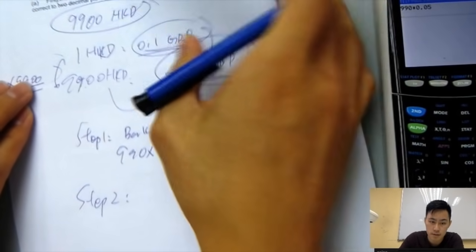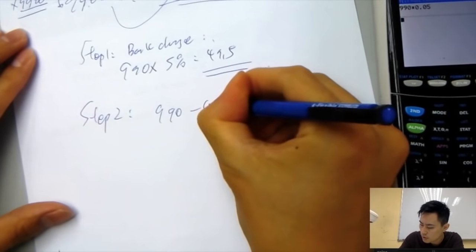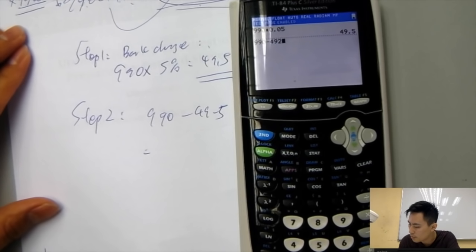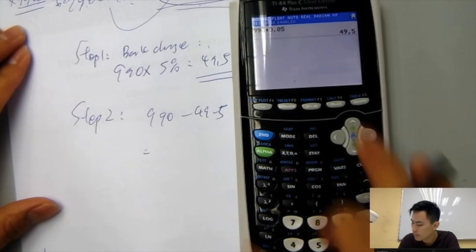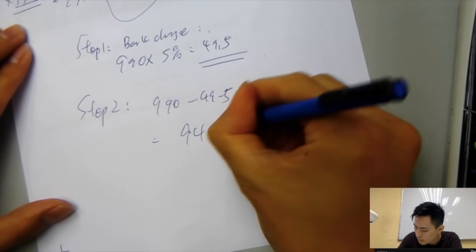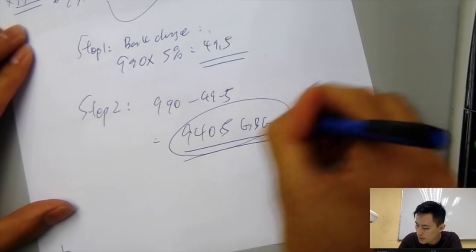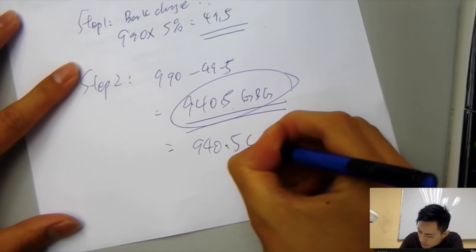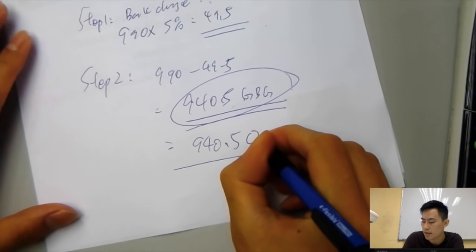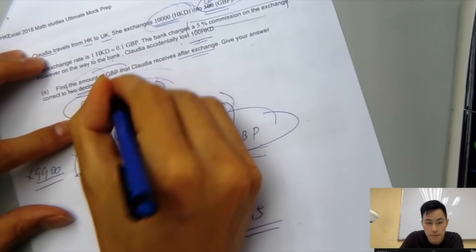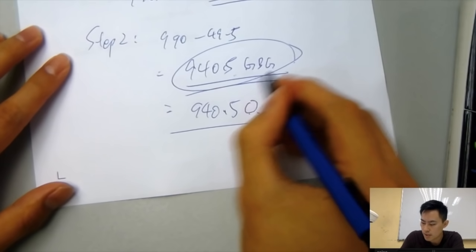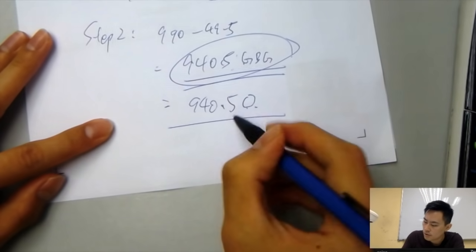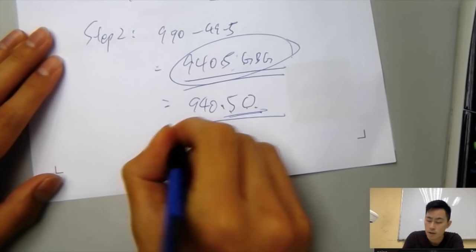Step two, just minus the service charge, then you get what you get. 990 minus 49.5, that would be 940.5 pounds. To two decimal places, don't write 0.5, you have to write 940.50. Even nothing at the end, you have to write 0 at the end. That's why that would be fitting the two decimal places. Otherwise, the examiner won't be able to know if you round it up or something. Add a 0 at the end.